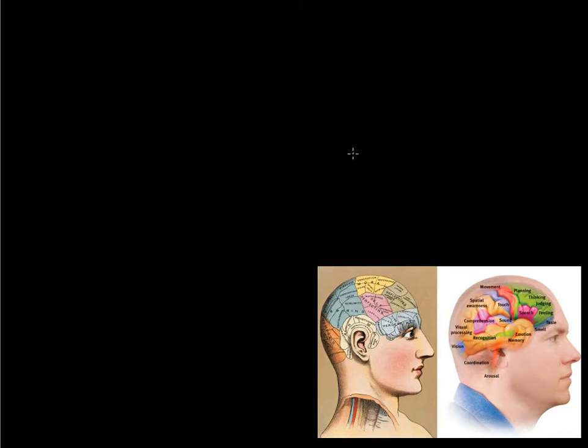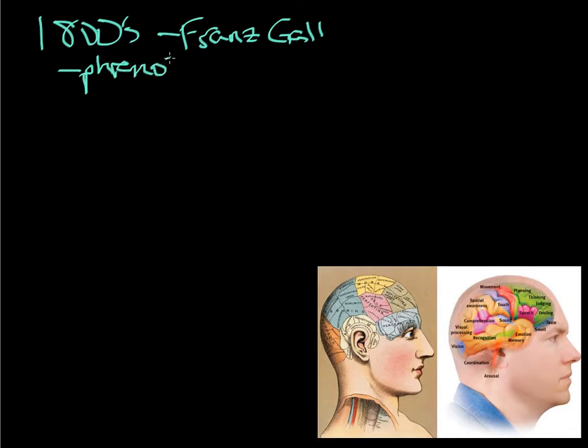Now, as is often the case, we always look back a little bit to understand the backdrop with which we have moved forward or come to where we are today. In the 1800s, one of the primary movers of looking at the nature of the brain and what goes on there is a guy by the name of Franz Gall. And his idea, what he did was down in the right-hand corner down here is what was referred to as phrenology.